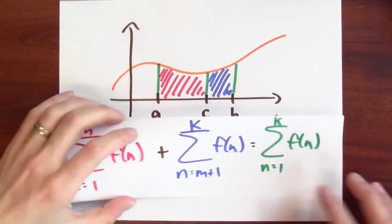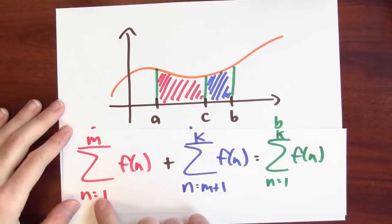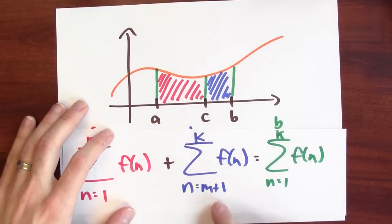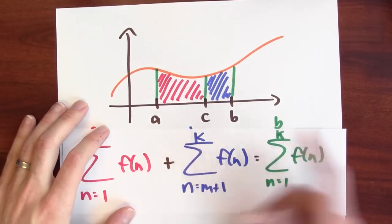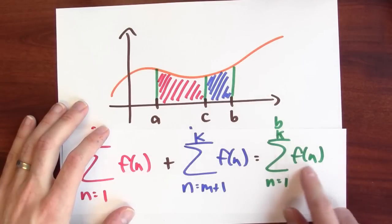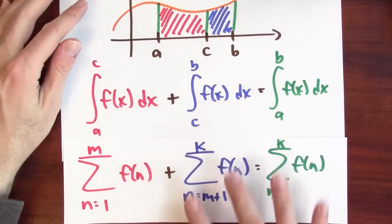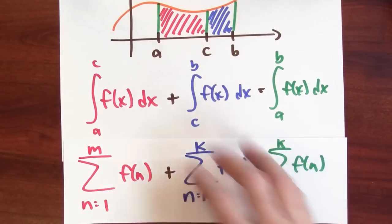We had this rule that said I could paste together integrals, and there's a corresponding rule for sums that says if I sum f of the numbers between 1 and m, and then f of the numbers between m plus 1 and k, that's the same as applying f to all the numbers between 1 and k and adding that up. So the same kinds of rules, there's an analogy there.